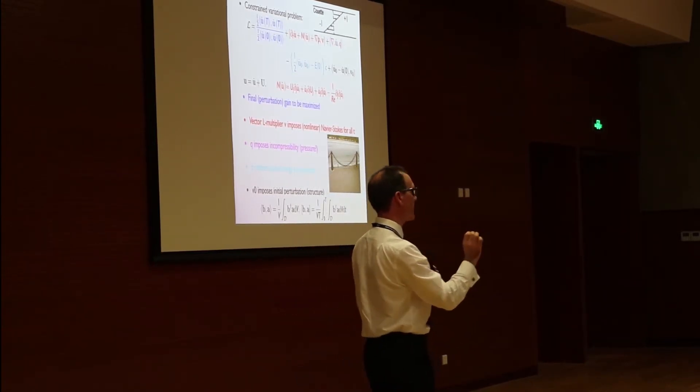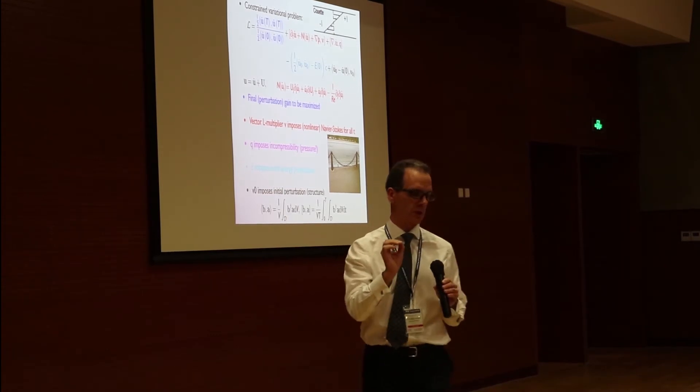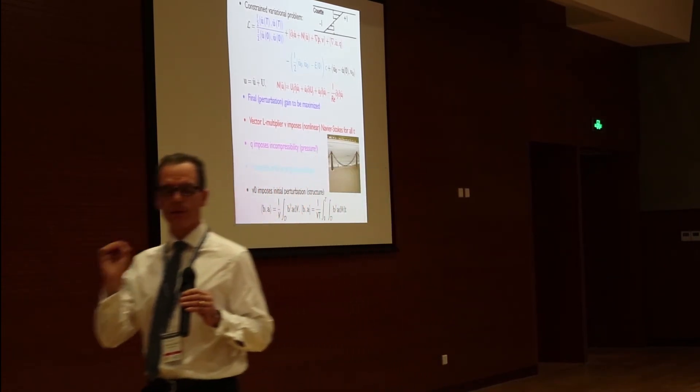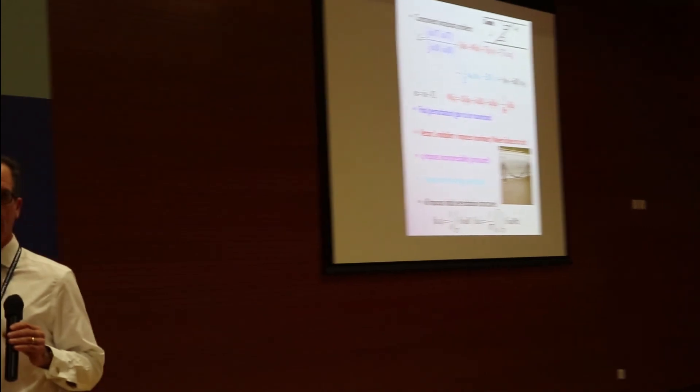but instead of having just a scalar Lagrange multiplier, I have to have this vector, depending on space and time Lagrange multiplier, the v, this adjoint variable.